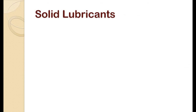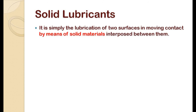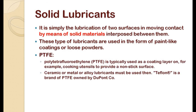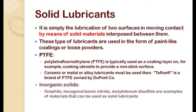The first type is solid lubricants. These are lubricants used in solid form, where a solid material is interposed between moving surfaces. They are used either as loose powder or as a paint-like coating. Teflon is one example — we can see Teflon coating on cooking utensils to provide a non-stick surface. Inorganic solids such as graphite and molybdenum powders are also used as solid lubricants.